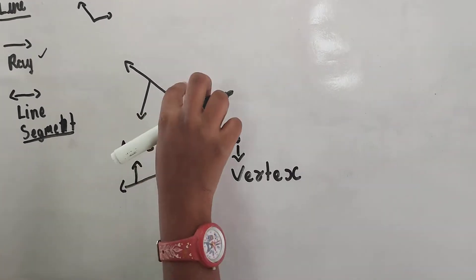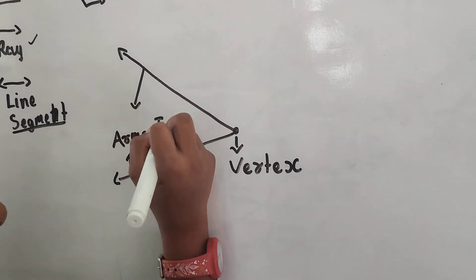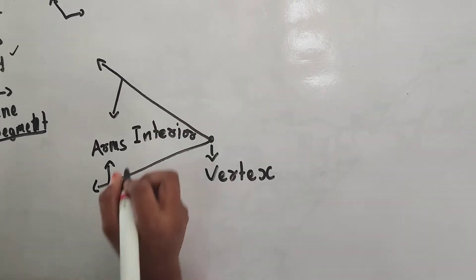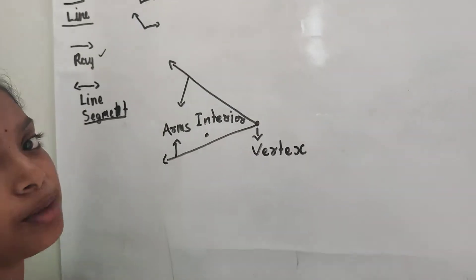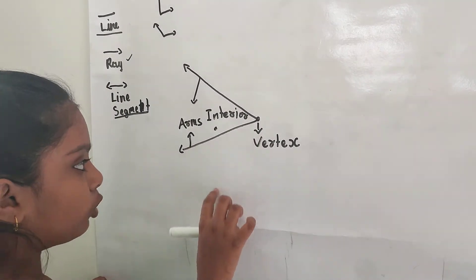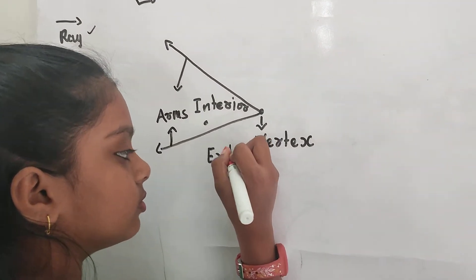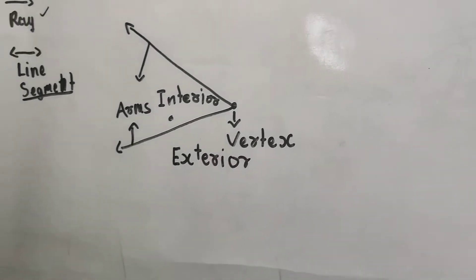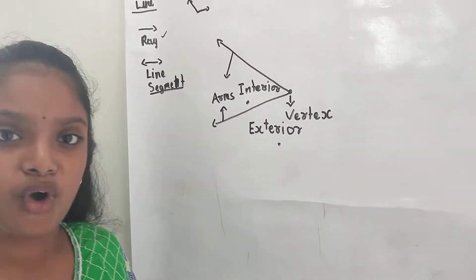The inner area which is between these two rays is known as the interior. If we keep a point in this interior, it is known as the interior point. Next, the outside area is known as exterior. If we keep a point here, it is known as the exterior point.